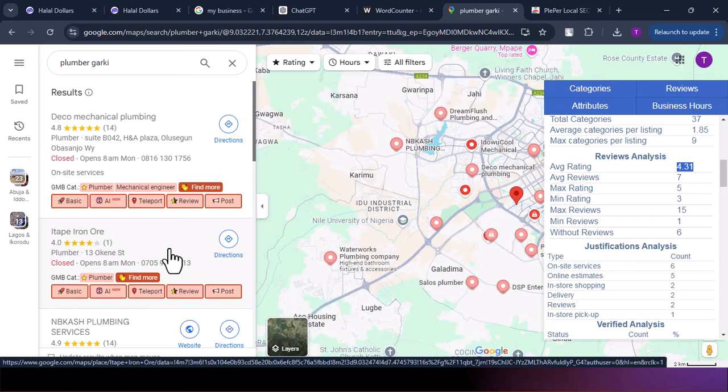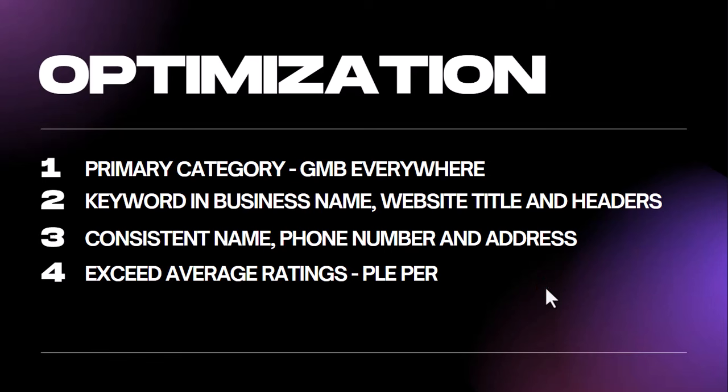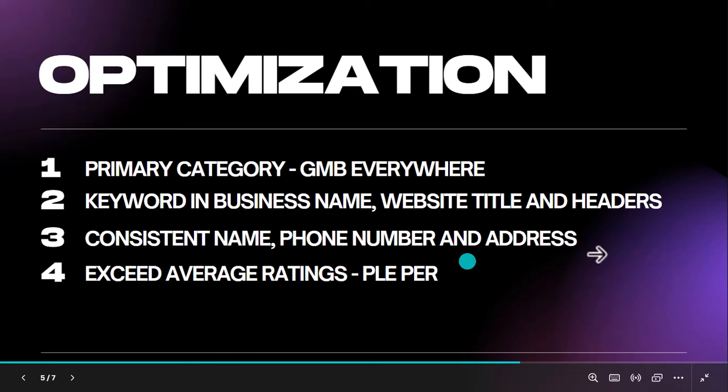So there are four major things to optimize. First, the primary category — use GMB Everywhere to find it. Second, the keyword — use it in your business name, and I showed how to add it to your website title and headers. Third, ensure you have consistent NAP: the same name, phone number, and address on both Google My Business and your website. Fourth, exceed the average ratings — use Plipper to know the average, and I always recommend exceeding the maximum rating so you rank higher than the best. I'll now show how to add phone number and address to the website footer.